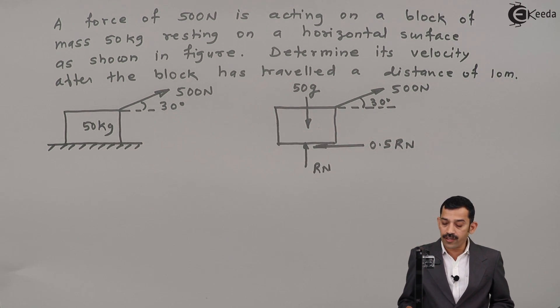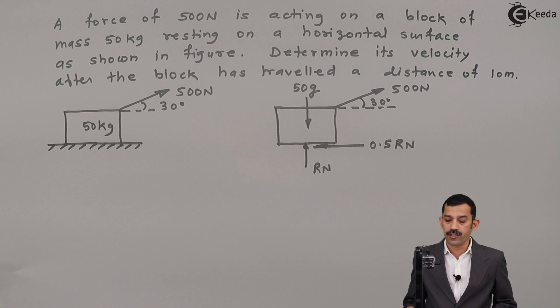Now to find out velocity of this block when the block has travelled a distance of 10 meters, work is done by 500 cos 30 and work is done by frictional force. Therefore first we will find out normal reaction at contact surface.